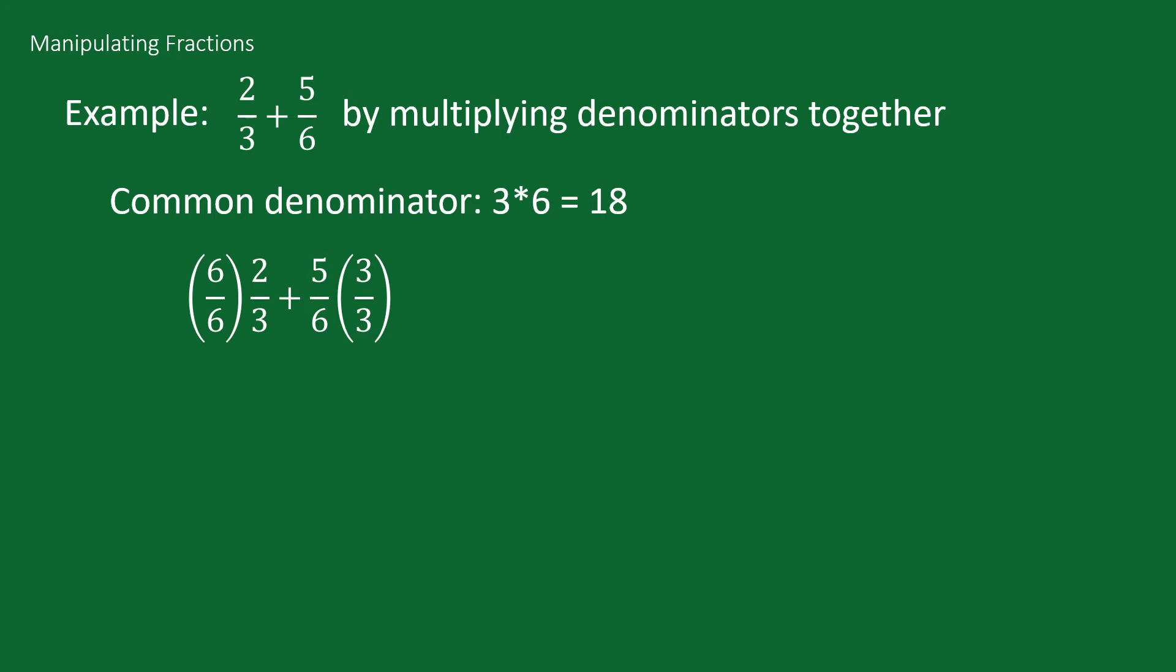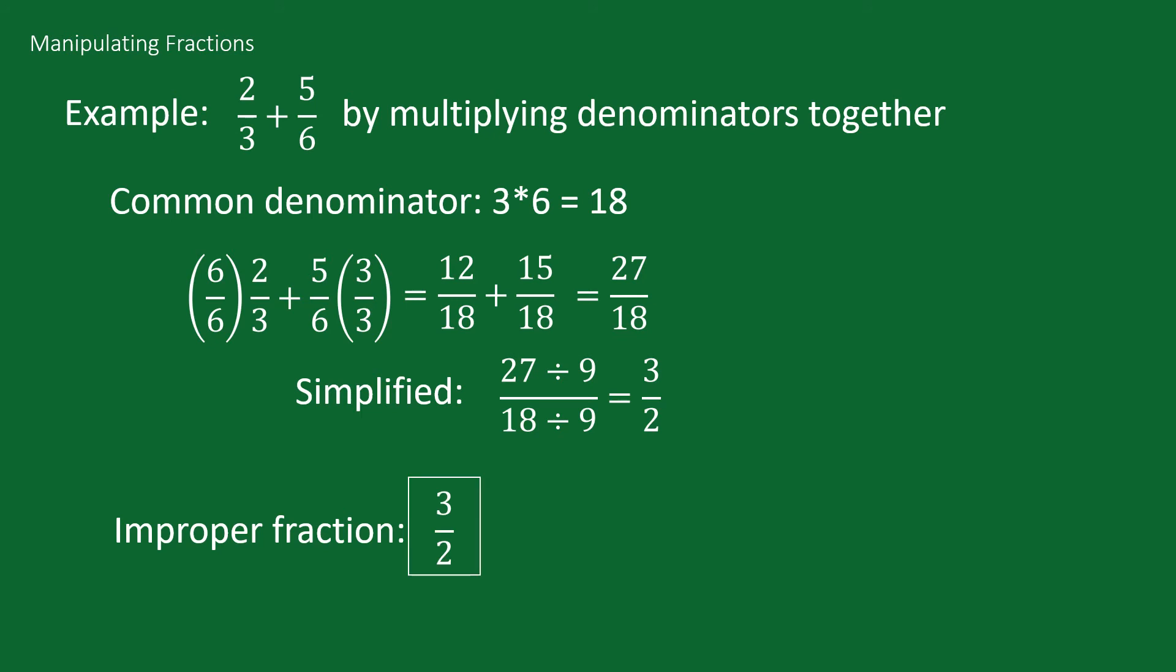Using the same logic as before, we can't just multiply by 6 or 3, so we have to multiply by 6 over 6 and 3 over 3 to get 18 on the bottom, and that equals 12 over 18 plus 15 over 18. Adding those together we get 27 over 18. Simplifying we get 27 divided by 9 over 18 divided by 9, and that reduces to 3 halves. So as an improper fraction we get 3 halves, and as a mixed number we get 1 and a half.